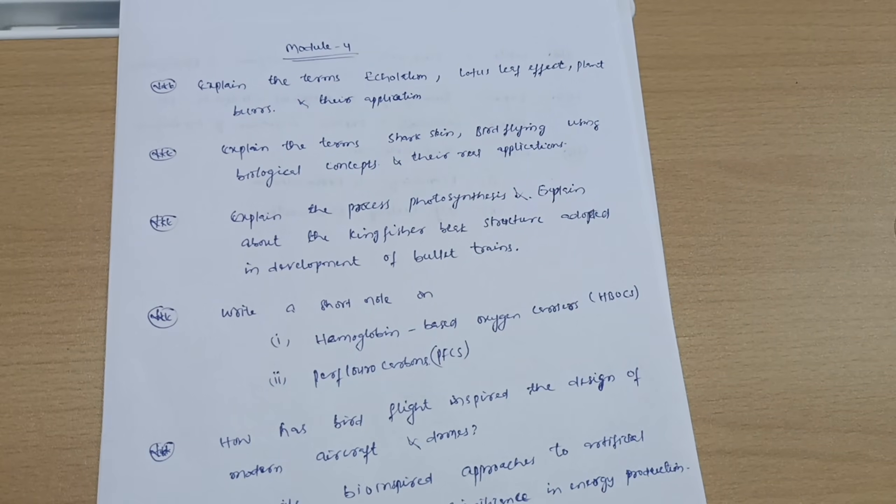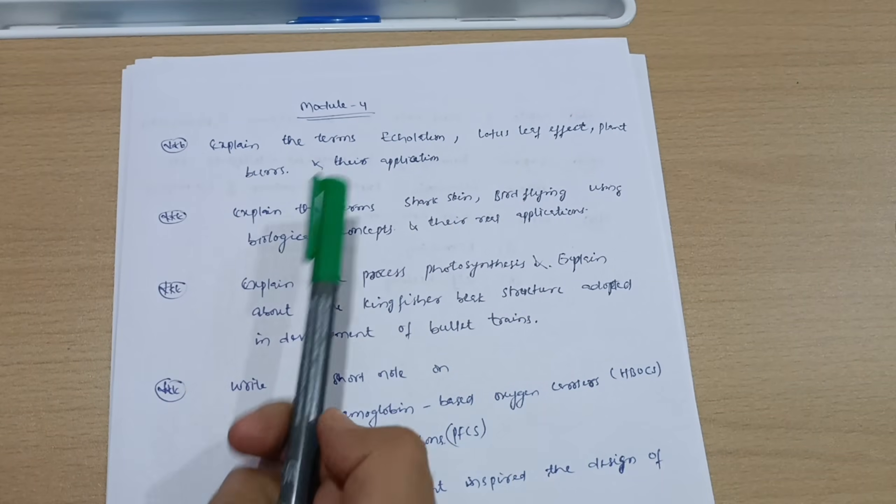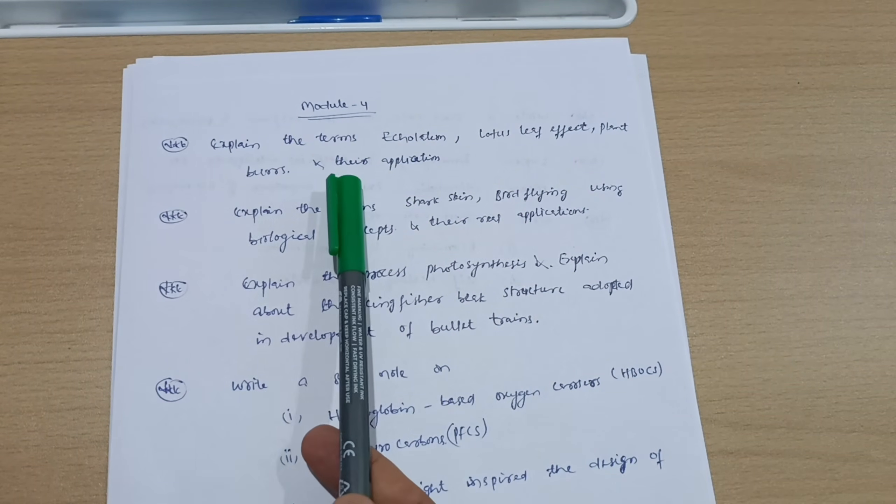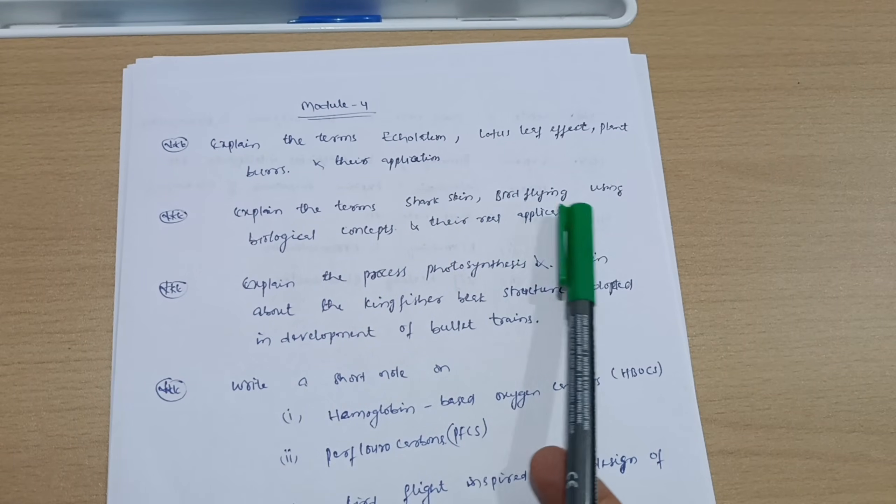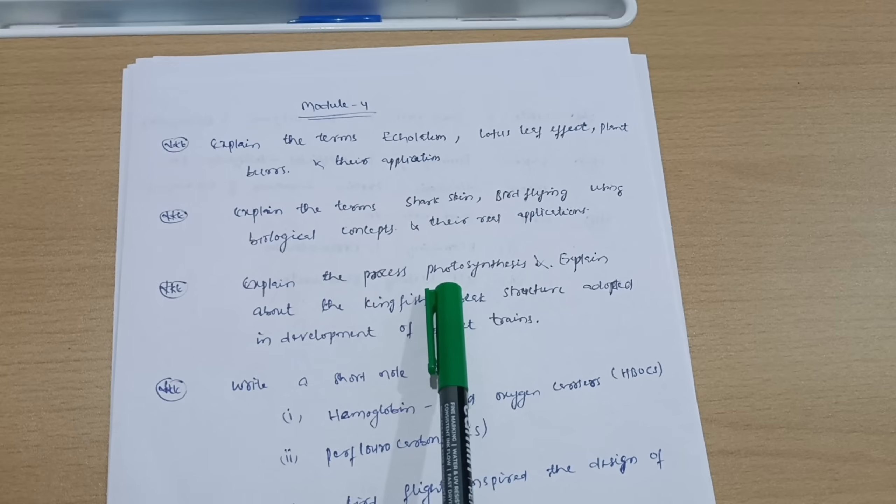Now after these three modules, you should also cover Module 4 if you want to score. Explain the terms: equalization, lotus leaf effect, plant buzz, and bee replication. Explain the terms shark skin and bird flying using biological concepts and their real applications. Explain the process of photosynthesis and explain the kingfisher beak structure adopted in development of bullet trains.